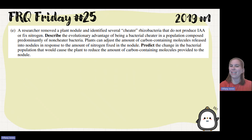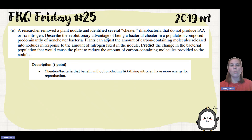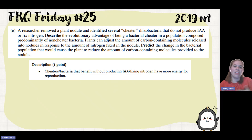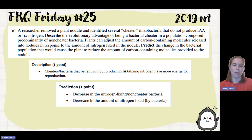Part E: A researcher identified cheater rhizobacteria that do not produce IAA or fix nitrogen. The evolutionary advantage of being a cheater in a population composed primarily of non-cheater bacteria is that cheaters get all the benefits without expending energy on producing IAA or fixing nitrogen, leaving them more energy for reproduction. Plants adjust the amount of carbon-containing molecules released into nodules in response to the amount of nitrogen fixed. As cheater frequency increases, nitrogen fixation decreases, which causes the plant to reduce carbon compound release into the nodules.